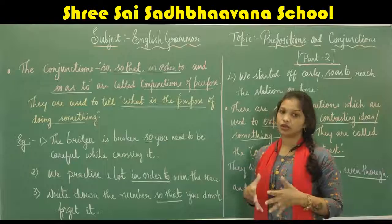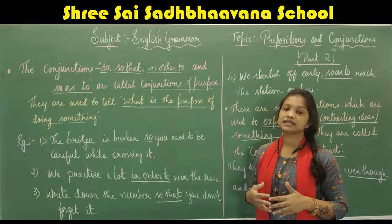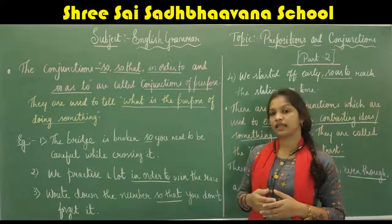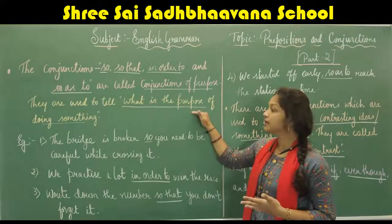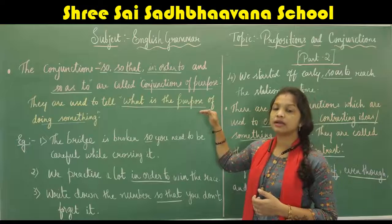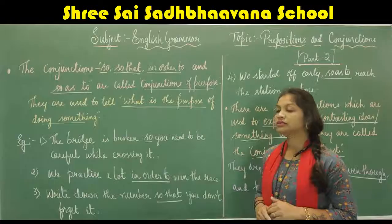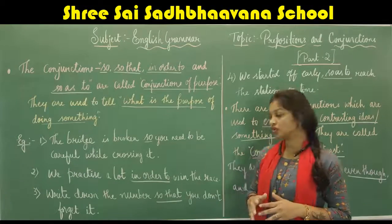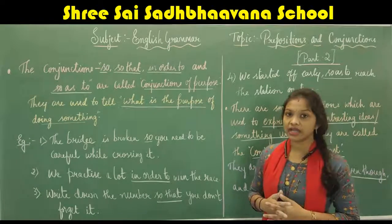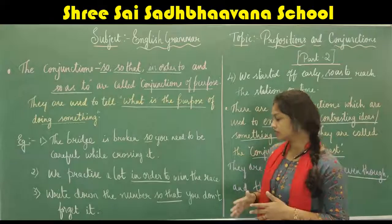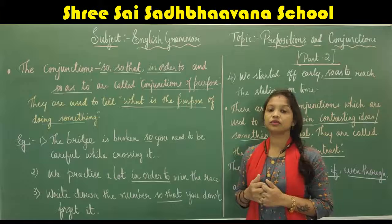Next example: 'We practice a lot in order to win the race.' Here the conjunction 'in order to' is used to tell the purpose. Another example: 'Write down the number so that you don't forget it.' The conjunction 'so that' is used to tell the purpose of doing something.